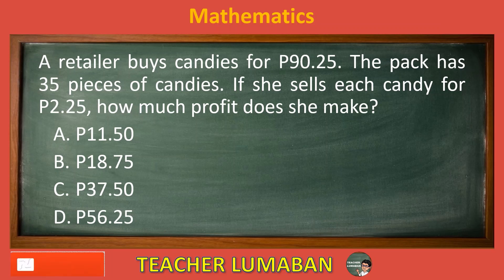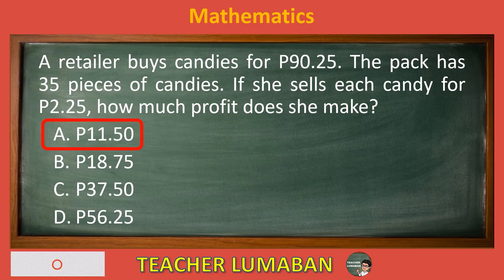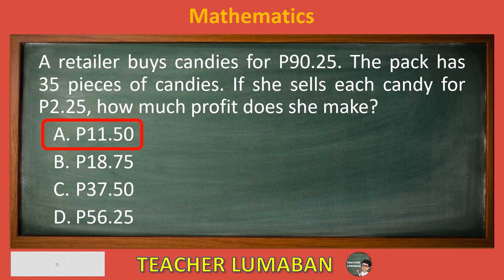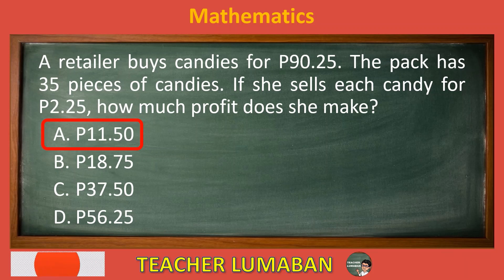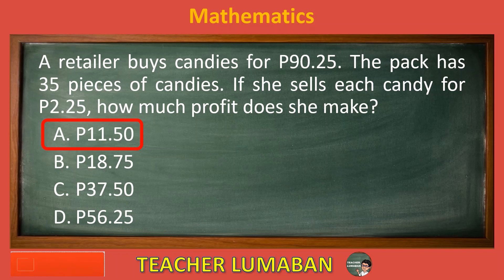The correct answer is Letter A, 11.50 pesos. A retailer buys candies for 90.25 pesos. The pack has 35 pieces of candies. If she sells each candy for 2.25 pesos, she can make 11.50 pesos profit.